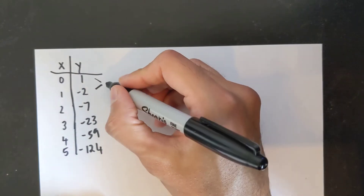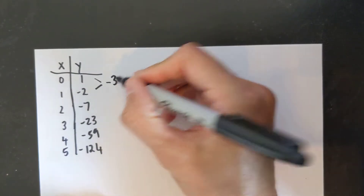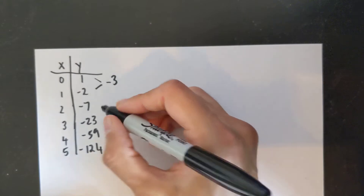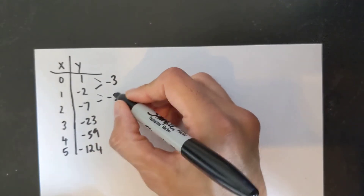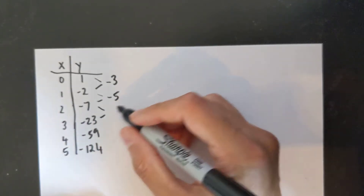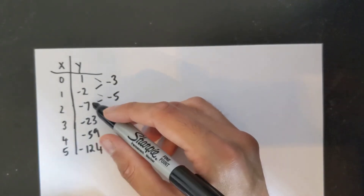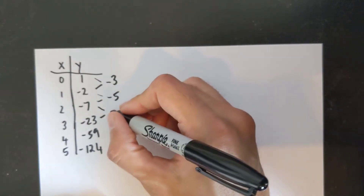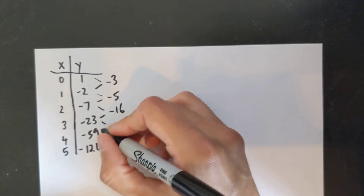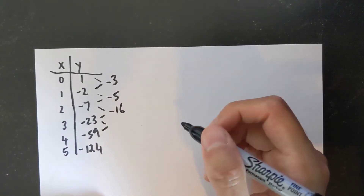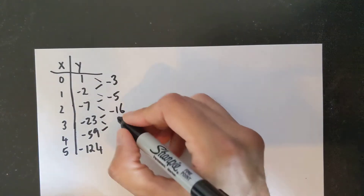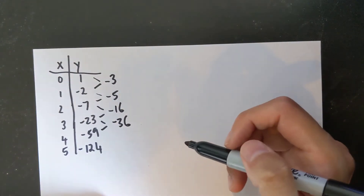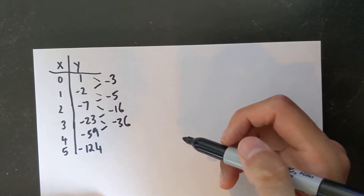Negative 2 minus 1 is negative 3. Negative 7 minus negative 2 is negative 5. Negative 23 minus... it's negative 16. I'll do one more: negative 36. Now these are not the same so the equation is definitely not linear.